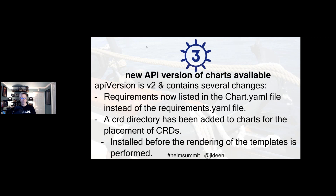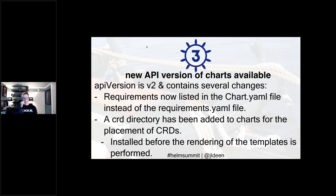There's also a new API version available. Previously under `chart.yaml` you didn't have to specify an API version. Now there's an API version 2 you can specify — technically you don't need to, but if your DevOps process relies on linting your chart with Helm 3, you'll get a failure because the Helm 3 linting process expects an API version to be defined. You can specify `v1` or `v2` — it's one simple line.